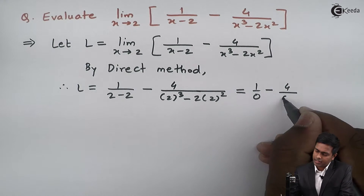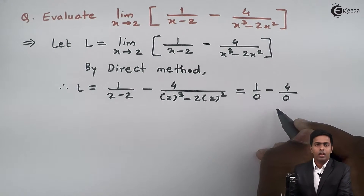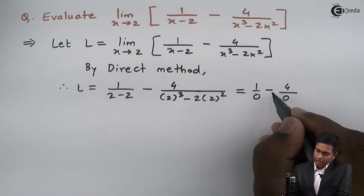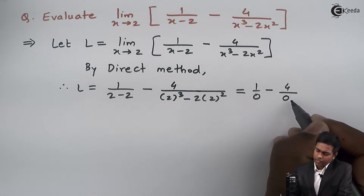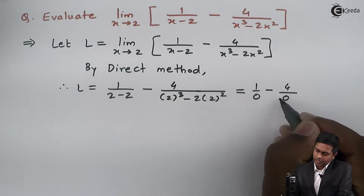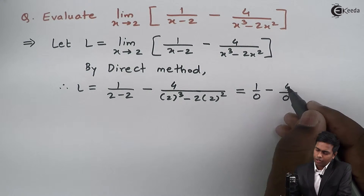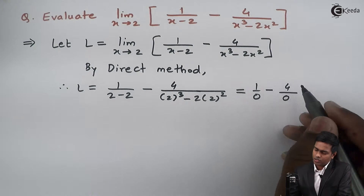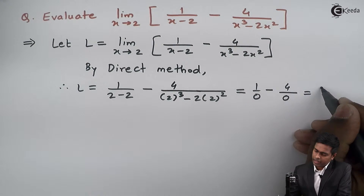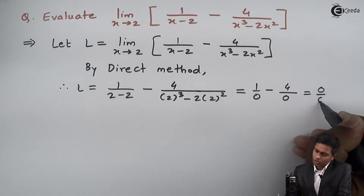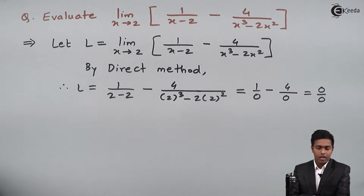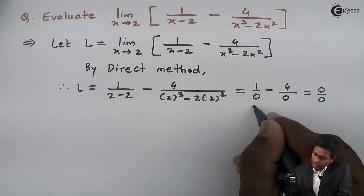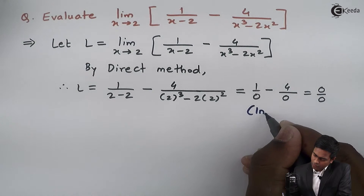So 8 minus 8 is 0. Multiplying 1 with 0 gives 0, and 4 into 0 is also 0. So 0 minus 0 is 0, and we get 0 upon 0 — we call this an indeterminate form.